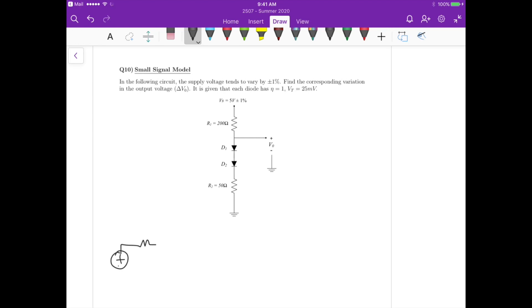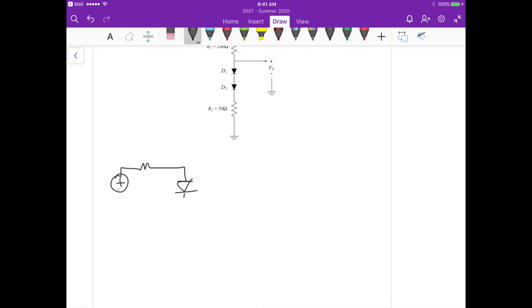So it's a voltage source in series with the resistor, then we have two diodes here, and then we have 50 ohms. So this is 50, it's 200, and then here we have 5 volts.